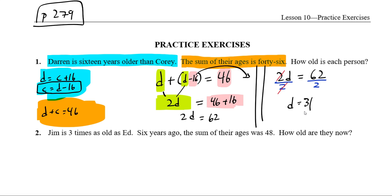This tells me that Darren is 31 years old. And Corey is Darren's age minus 16, because Darren is 16 years older. So Darren's age is 31. If we take away 16, we're going to get 15. So Corey is 15 years old. Together, 31 plus 15 has to be 46. And 31 plus 15 is indeed 46. So this checks out. Darren is 31, Corey is 15.